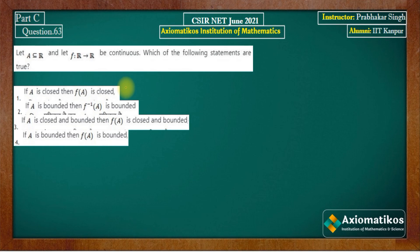Hello dear students, welcome to this solution series for CSIR Net June 2021. I will be solving problem number 63, which is of real analysis from part C. Let us have a look at this problem. Let A be a subset of R and f is a function from R to R which is continuous. Then which of the following statements are true?